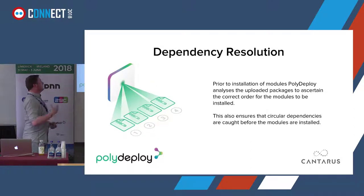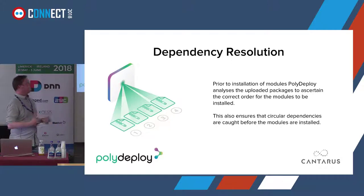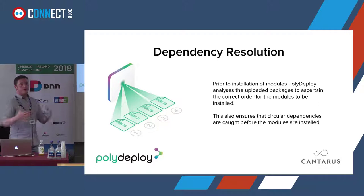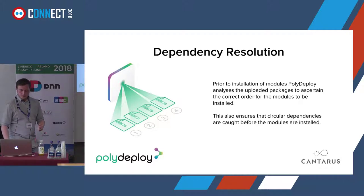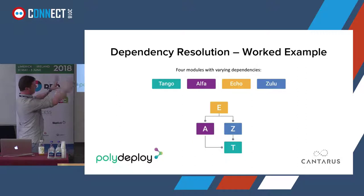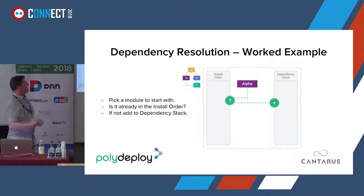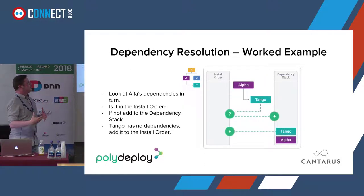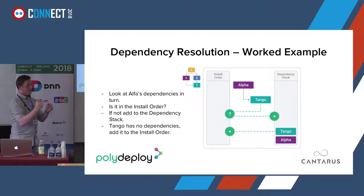One of the key features of Polydeploy is dependency resolution. If we've got complicated solutions with 15, 20, or 30 modules that are all interdependent, it will work out what order they need to be installed based on their DNN manifest. For example, if we've got E that depends on A and Z, and they both depend on T, it will scan their manifests at upload time and order them correctly — creating a stack of the actual installation order so you don't get any of those dependency issues.